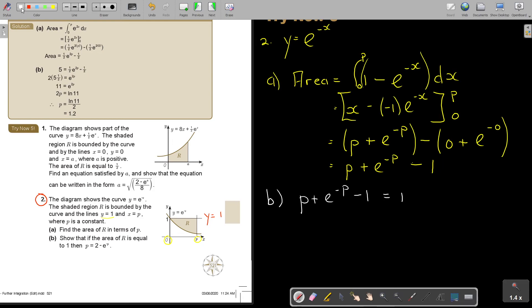So if I get that expression in terms of P, then it's going to be P is equal to, this goes over, so it's 2 minus E to the power of negative P.